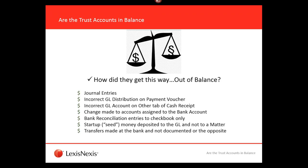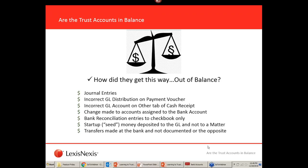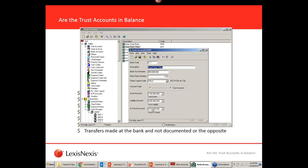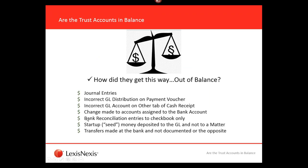Another cause is a change made to accounts assigned to the bank account — someone went into Juris and changed the trust bank setup accidentally or on purpose. Also, if you reconcile your bank accounts through Juris and you've made reconciling entries, you can get your checkbook in Juris out of balance from your general ledger. You'll get a big red message on the bank account indicating something is in the checkbook but not the general ledger, or vice versa. Reconciling bank entries is the most common way that happens.